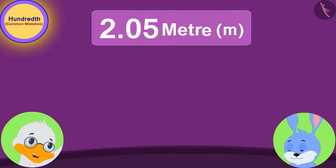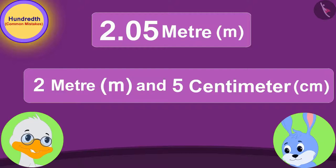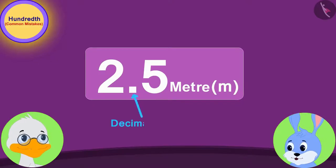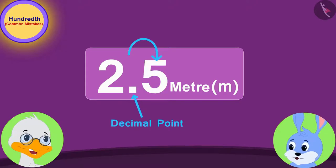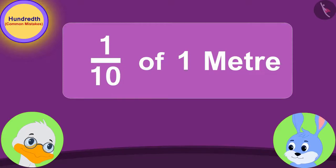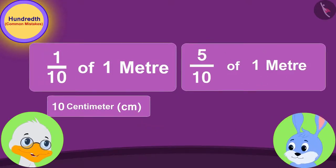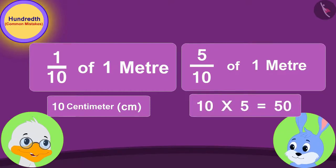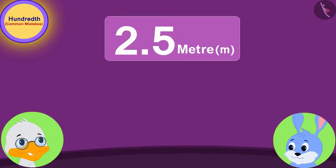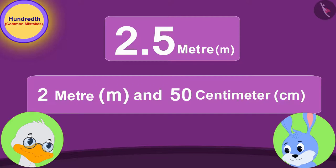In this way, 2.05 is equal to 2 meters and 5 centimeters. Now, in the same way, in 2.5 meters, the number after the decimal is 5, or the 5 tenths part of a meter. One tenth part of a meter is equal to 10 centimeters. Therefore, the 5 tenths part of a meter will be equal to 10 times 5, or 50 centimeters. Thus, 2.5 meters is equal to 2 meters and 50 centimeters.